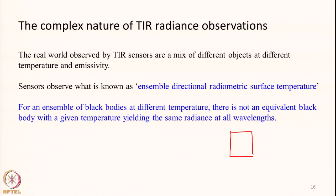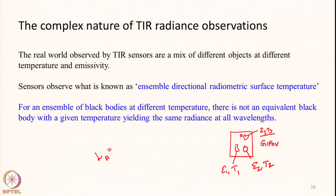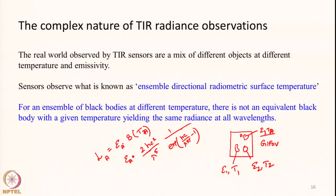Within one GIFOV there can be many different objects, each with its own emissivity and its own temperature. Because of its temperature and emissivity, each object has its own radiance. For object A, the radiance L is given by emissivity times the Planck's function at temperature T_A: 2hc² / λ⁵ × 1 / (exp(hc / λkT) − 1). This is the radiance from one particular object.